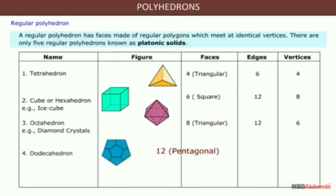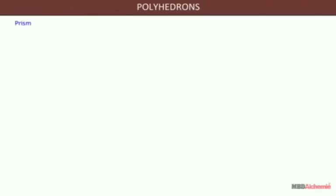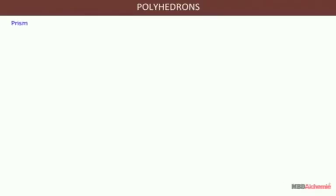The dodecahedron has twelve faces, thirty edges, and twenty vertices. The icosahedron has twenty faces, thirty edges, and twelve vertices.